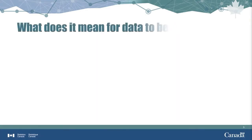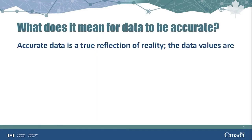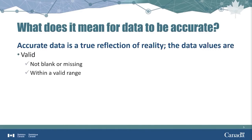What does it mean for data to be accurate? Accurate data is a reflection of reality. In other words, the data values are valid — so not blank or missing — and the values are within a valid range. Accurate data is also correct. First, let's look at the concept of valid data.